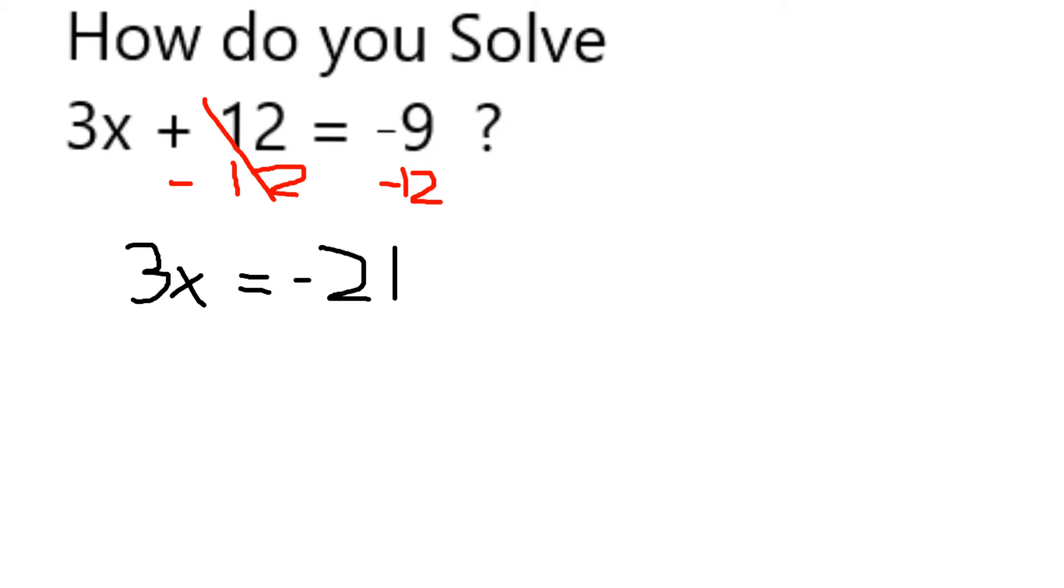3 times some number is equal to negative 21. To find out what that number is, I can divide both sides by 3. 3 divided by 3 is just 1.